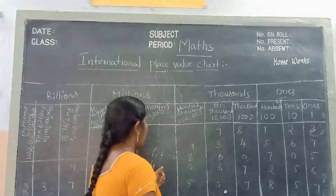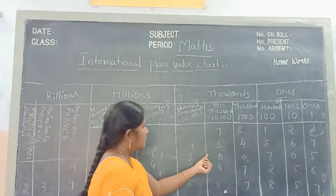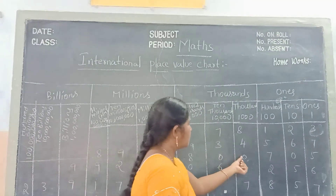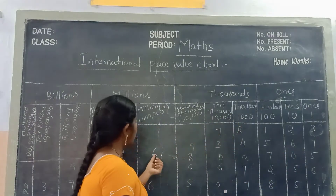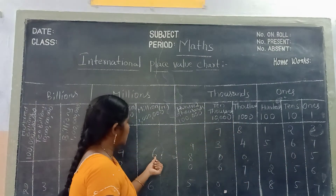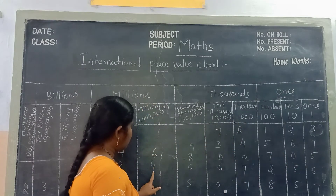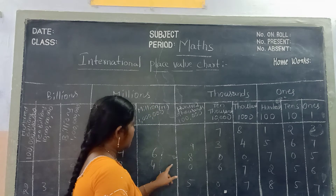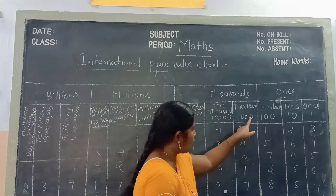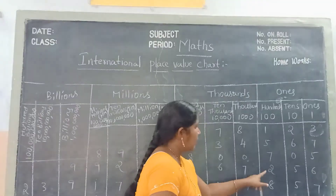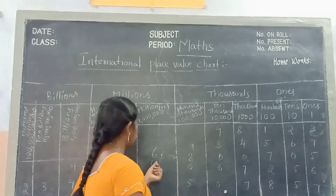Next number: 6, 8, 0, 0, 7, 0, 5. How to read this one? See children: six million, eight hundred thousand, seven hundred and five.